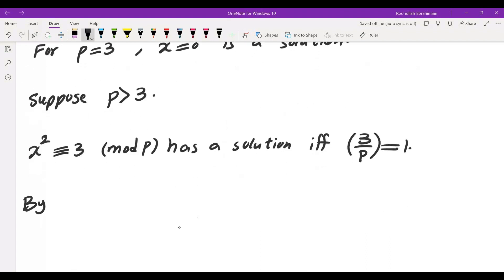By quadratic reciprocity, 3 over P is going to be negative 1 to the power of 3 minus 1 over 2 times P minus 1 over 2 times P over 3.